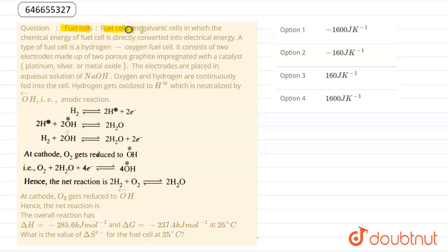This is a paragraph about fuel cells. Fuel cells are galvanic cells in which the chemical energy of fuel is directly converted into electrical energy. A type of fuel cell is the hydrogen-oxygen fuel cell.